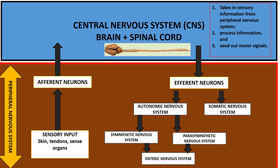Information is first taken in by afferent neurons, either from the external environment — for example via the skin — or from the internal environment, such as food touching the GIT, which would be a stimulus for information to be taken to the brain.